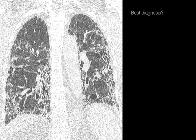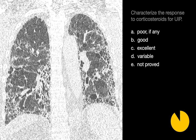The best diagnosis in this case of bilateral lower lung predominant peripheral reticular interstitial fibrosis with associated honeycombing would be UIP or IPF. Characterize the response to corticosteroids for UIP. Treatment options for UIP are relatively limited, and the response to corticosteroids is relatively poor, if any.